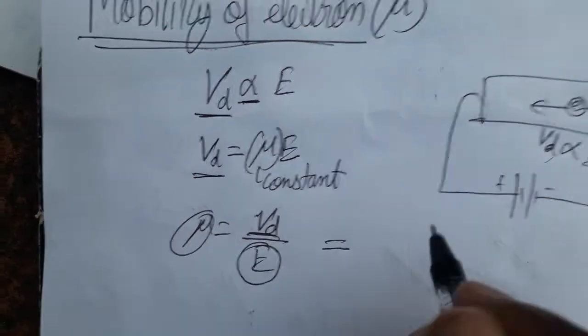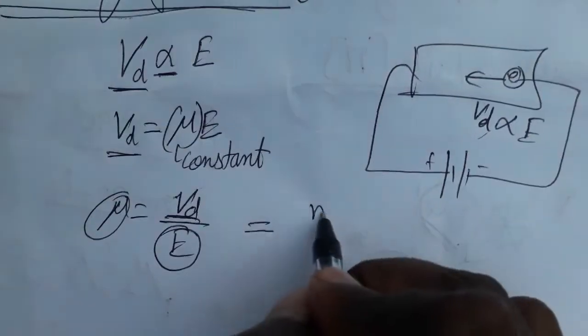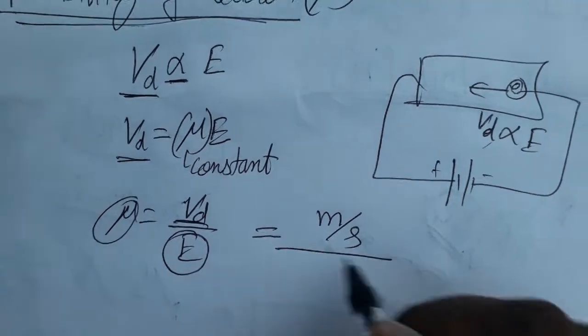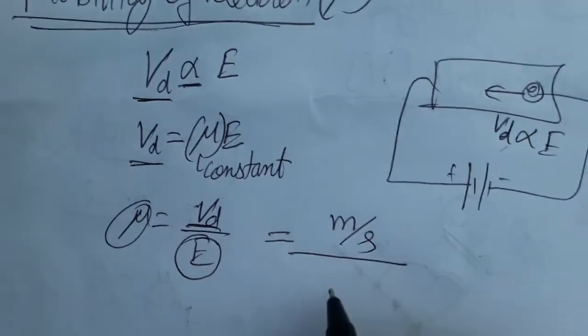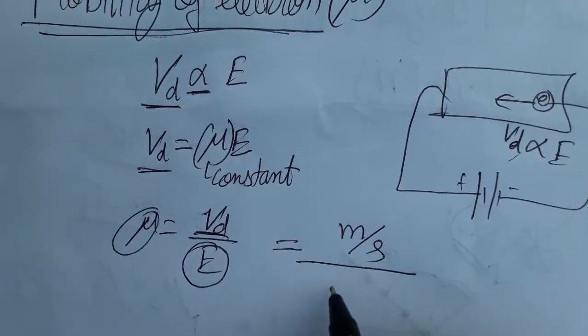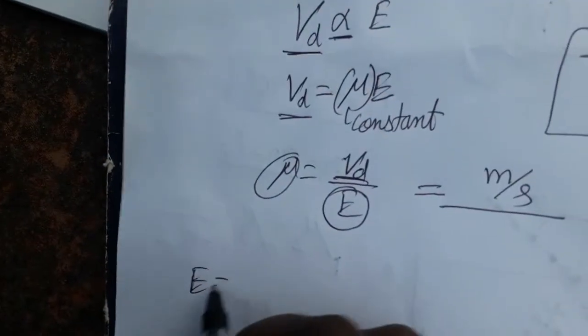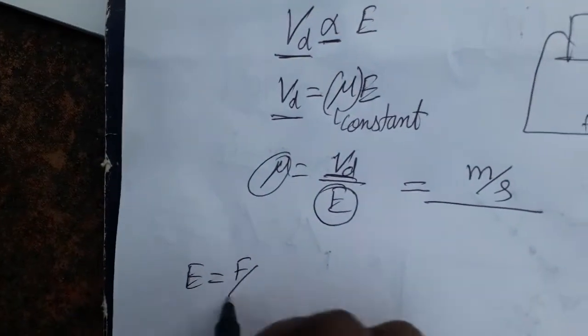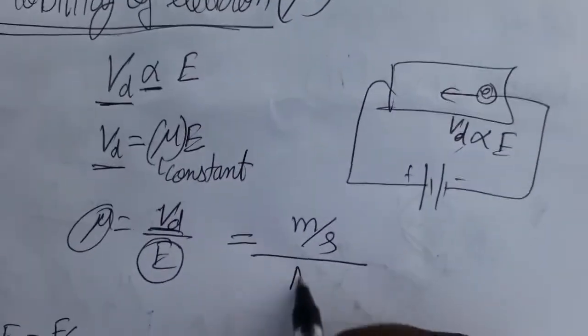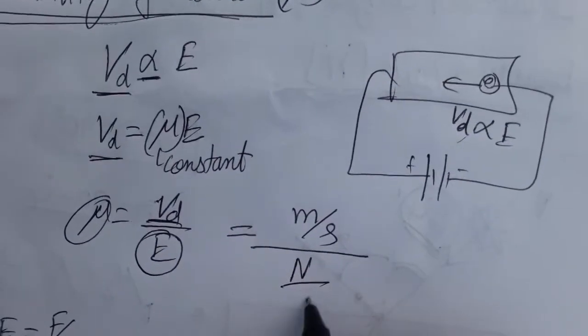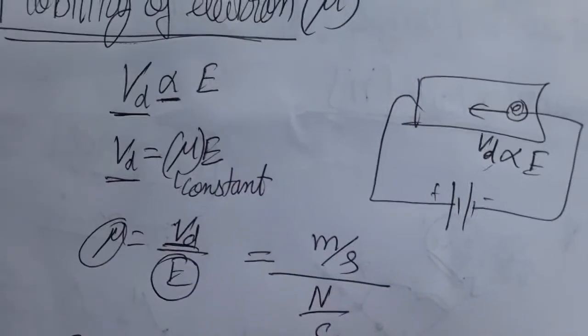So drift velocity has units of meter per second. Electric field is equal to force per unit charge, which is Newton per Coulomb, so we write Newton per Coulomb.